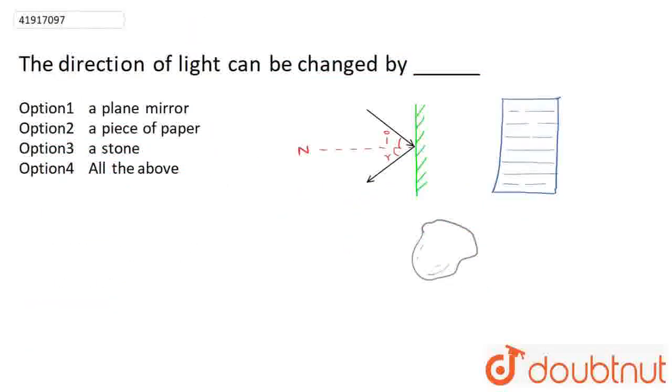Hello everyone, so the question is: the direction of light can be changed by dash. The first option is a plane mirror, the second is a piece of paper, the third is a stone, and the fourth is all of the above.